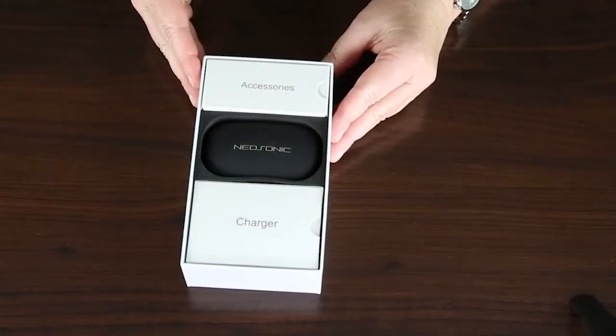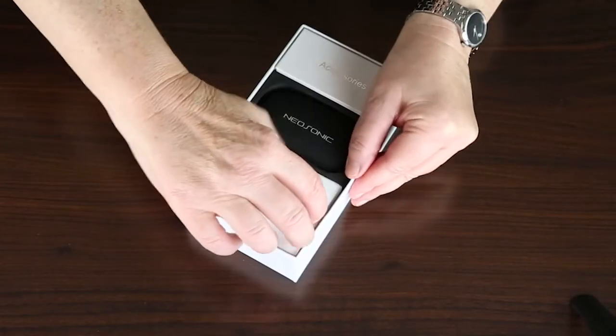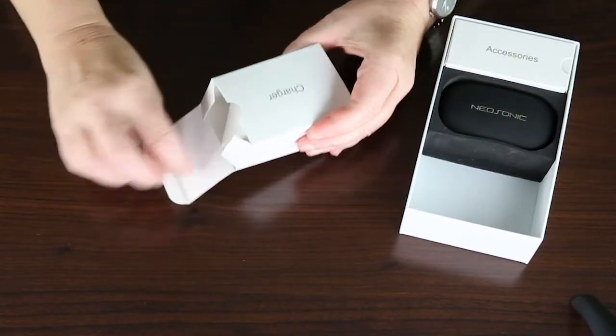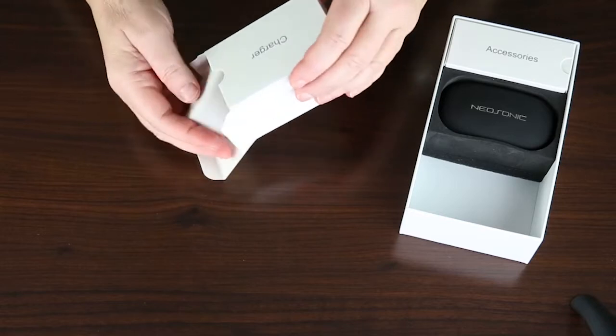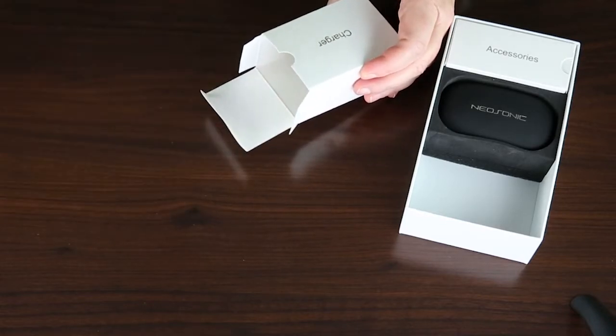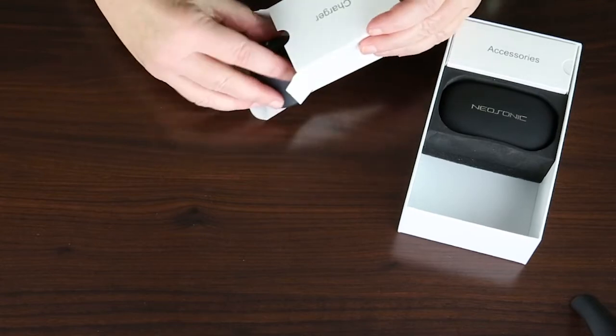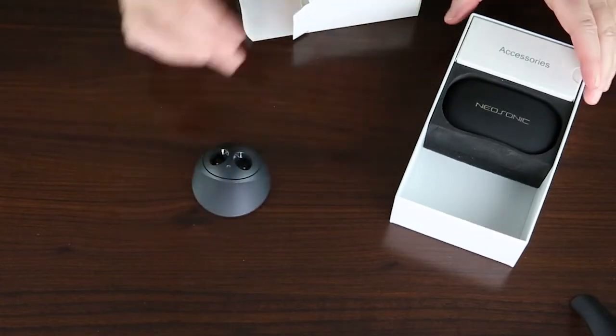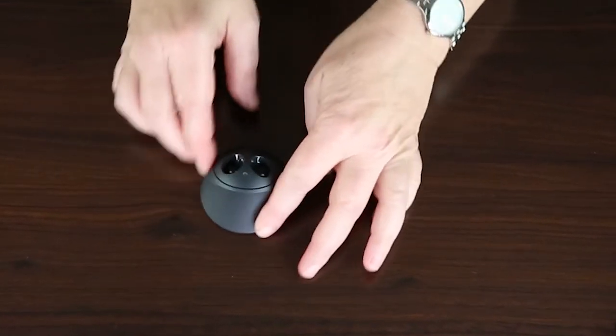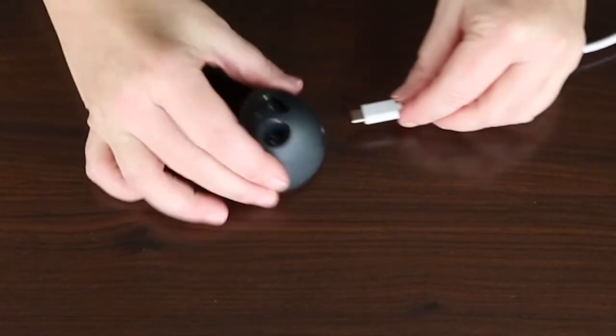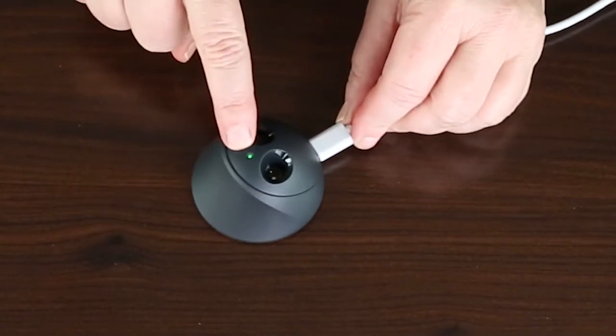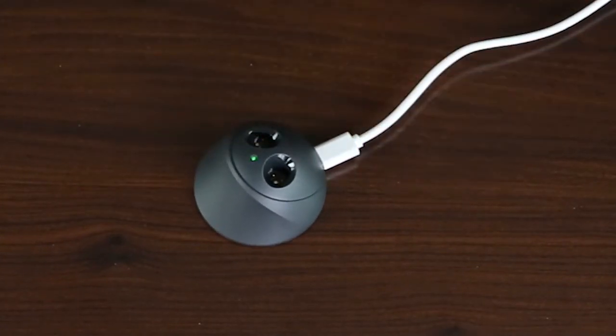Also included in your box, you have your charger. Your charger box looks like this. Inside you will find the adapter to plug into the wall. You will also find the actual charger base. This is where you will charge your hearing aids. When you plug in your base, simply plug in. You will know that you have power to it. There's a green light that lights up here.